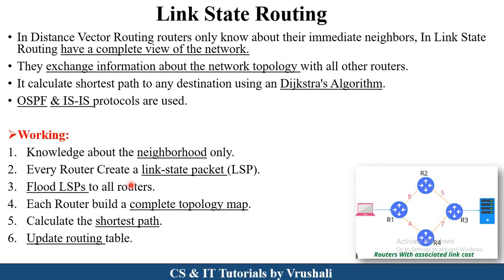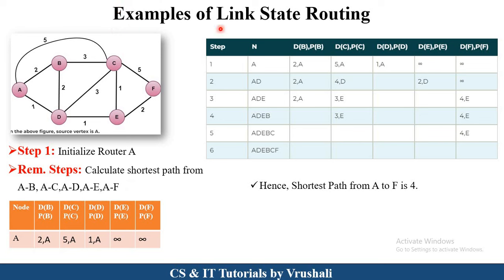Let's understand with an example. In this particular network, you have to find out the shortest path between A to F. Manually: the first path is A-D-E-F with distance 1 plus 1 equals 2, and 2 plus 2 equals 4. So A to F distance is 4. Another path is A-B-C-F: 3 plus 2 equals 5, and 5 plus 5 equals 10. Path one has distance 4 and path two has distance 10, so the shortest one is 4.